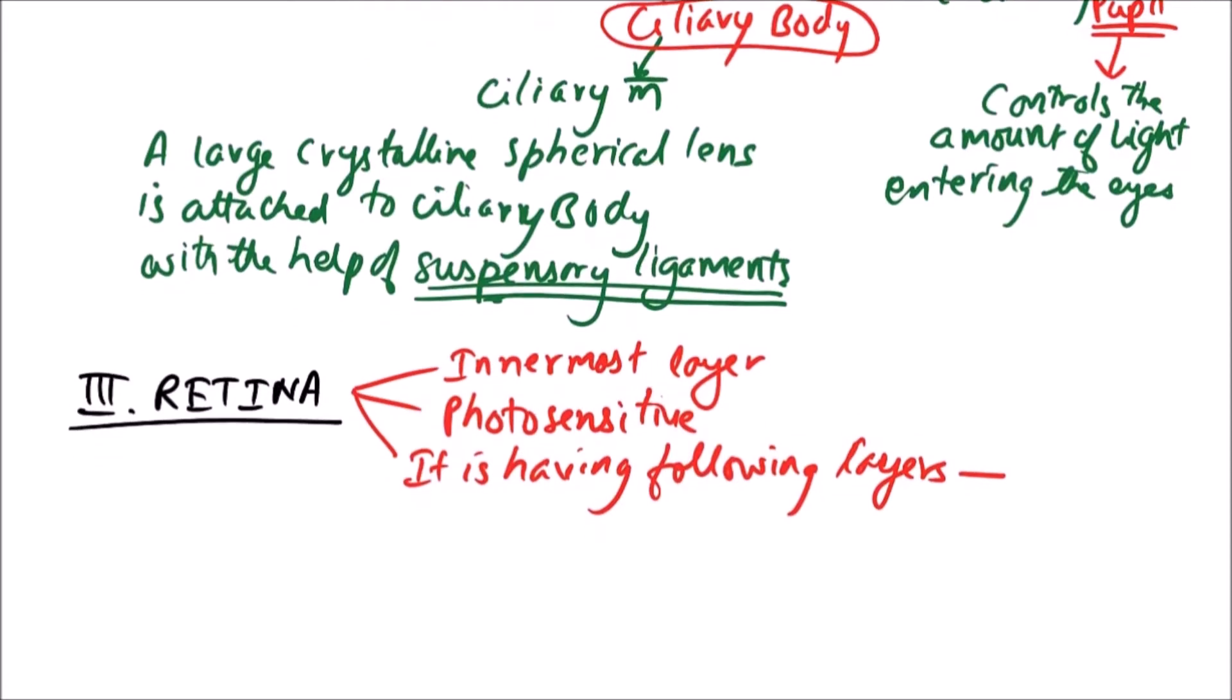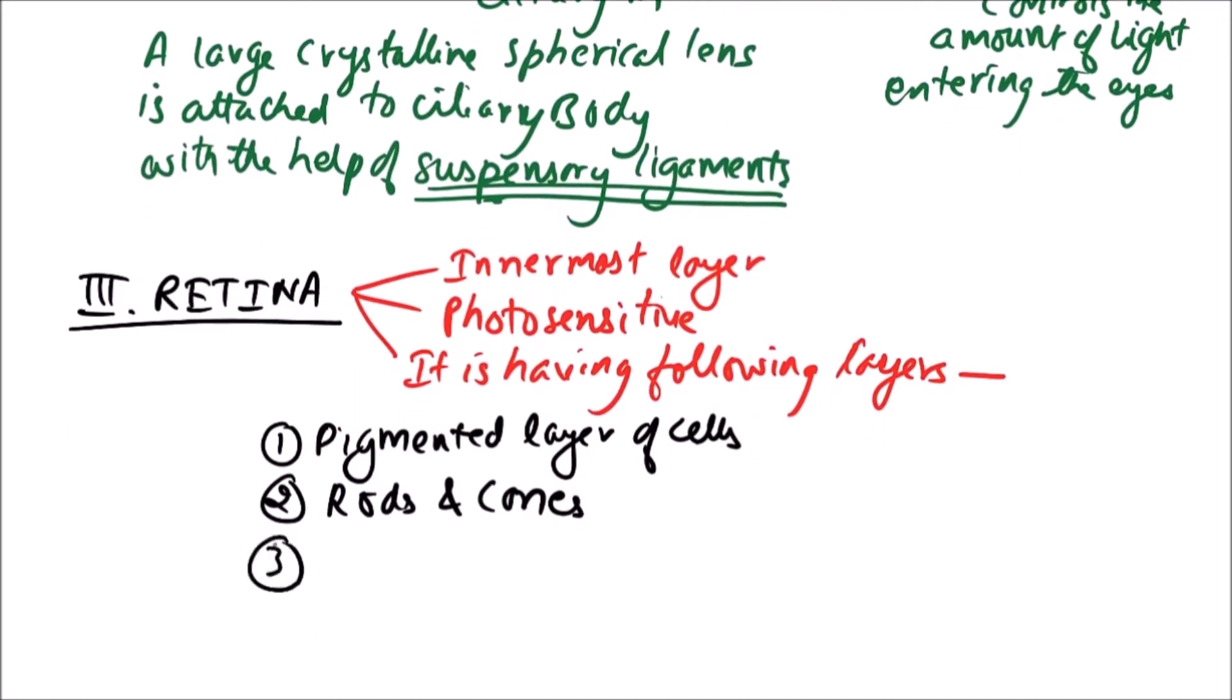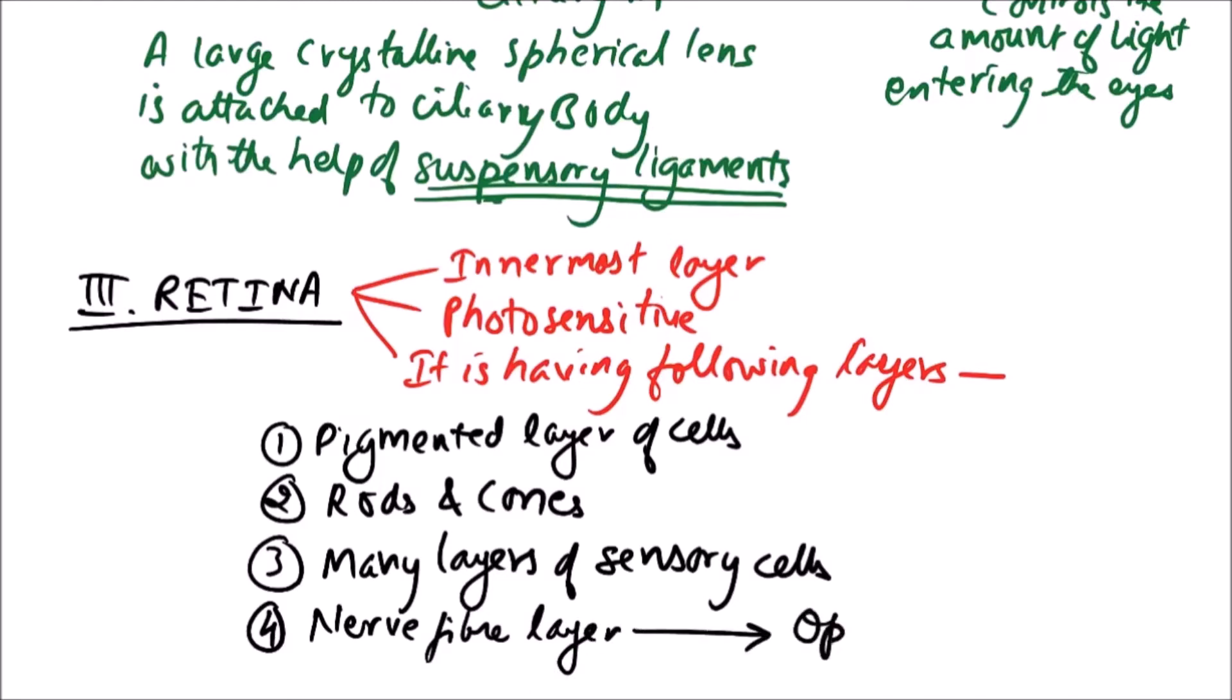These layers are: first one is the pigmented layer of cells, it is the outermost layer. Then comes the inner layer of rods and cones. Then inner to rod and cones, there are many layers of sensory cells. And finally, the innermost layer is known as nerve fiber layer. This nerve fiber layer finally leads to the optic nerve of that eyeball.